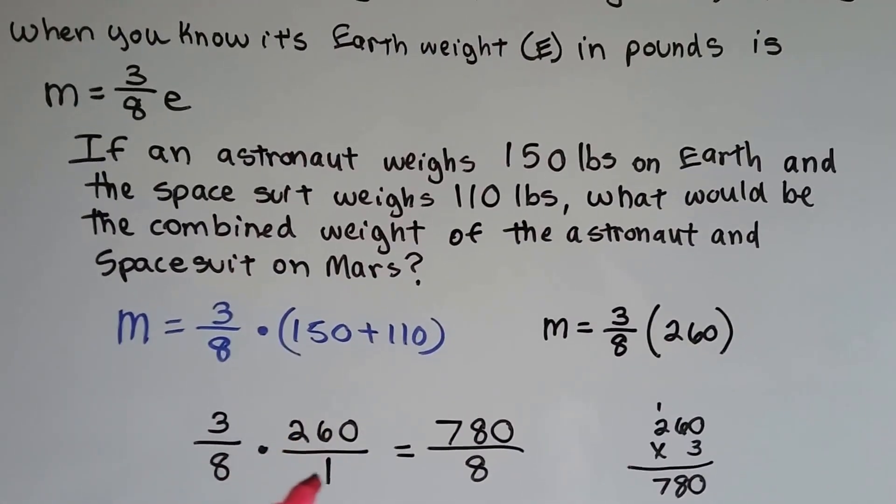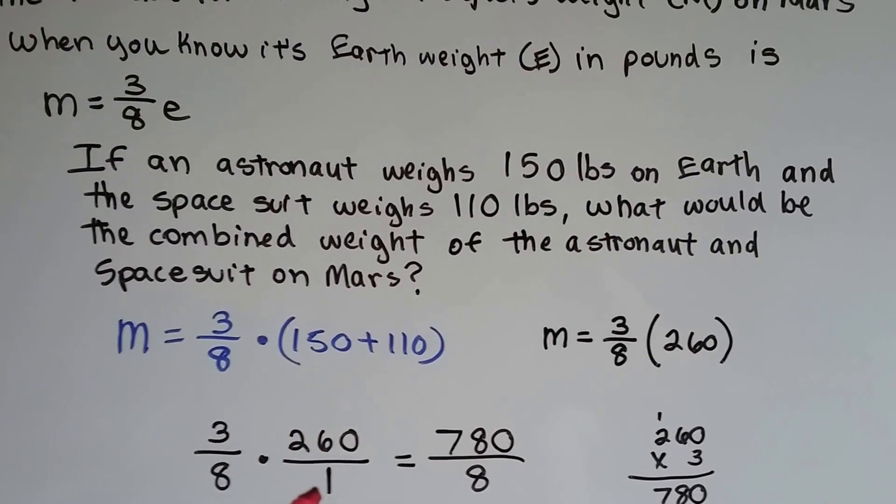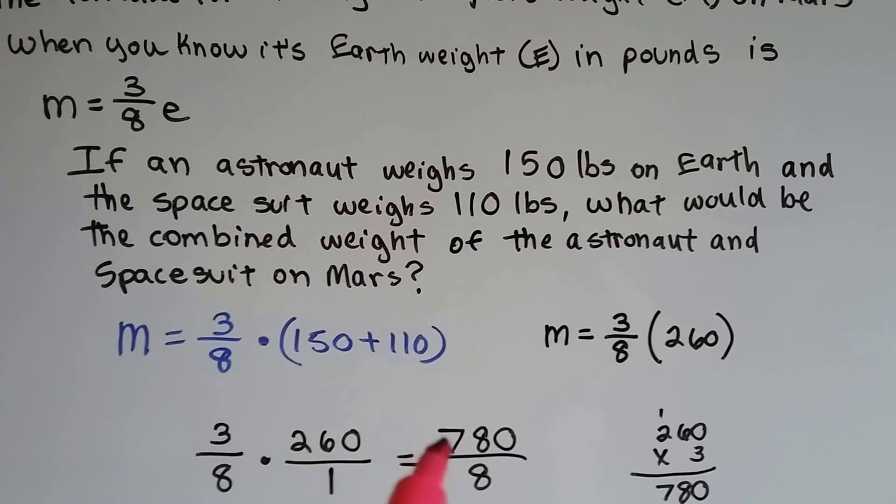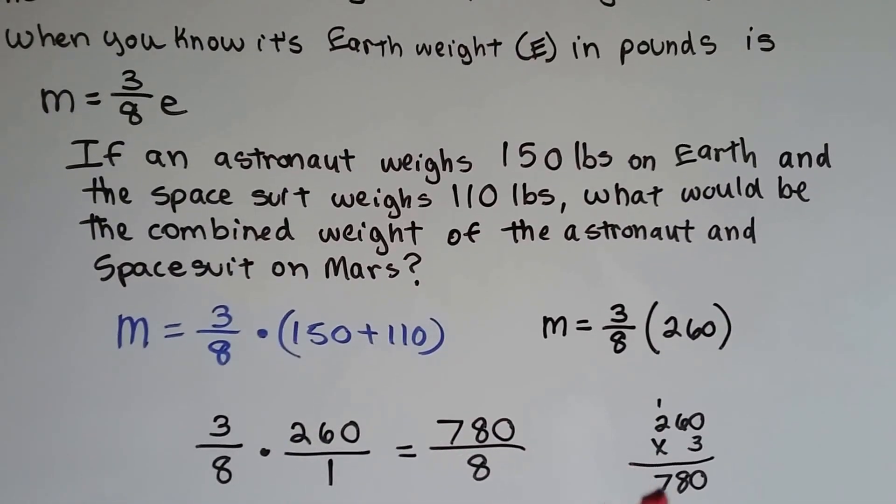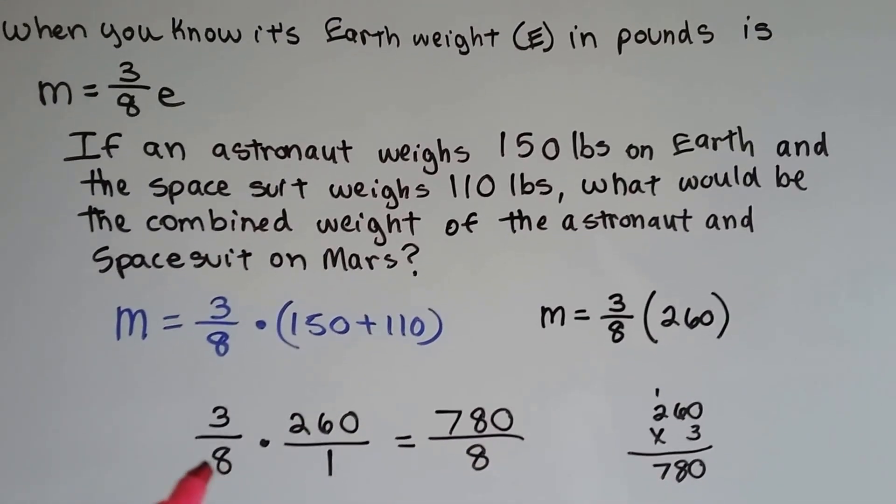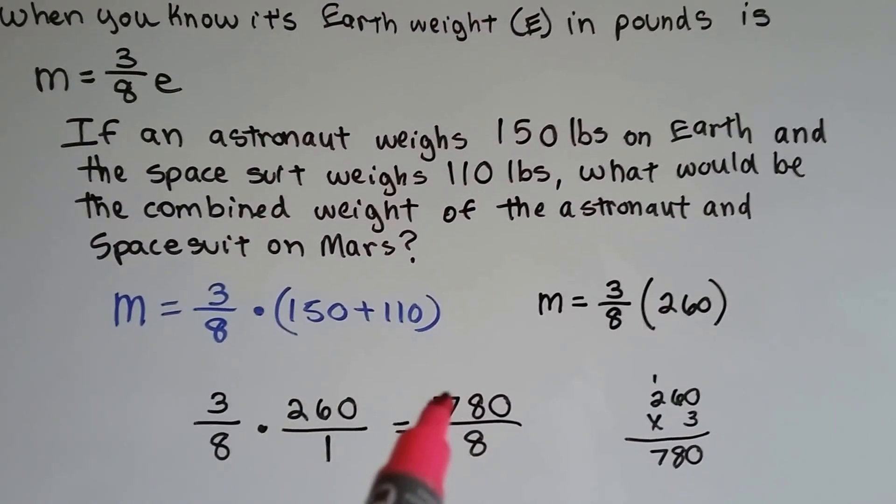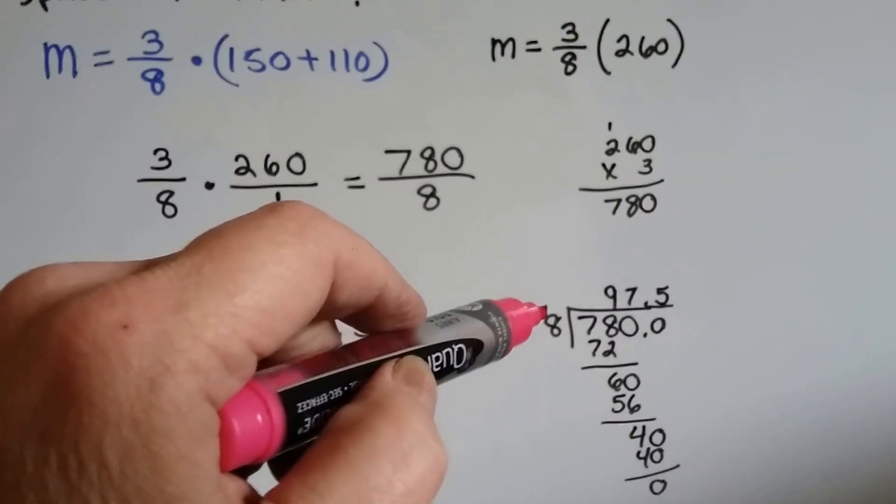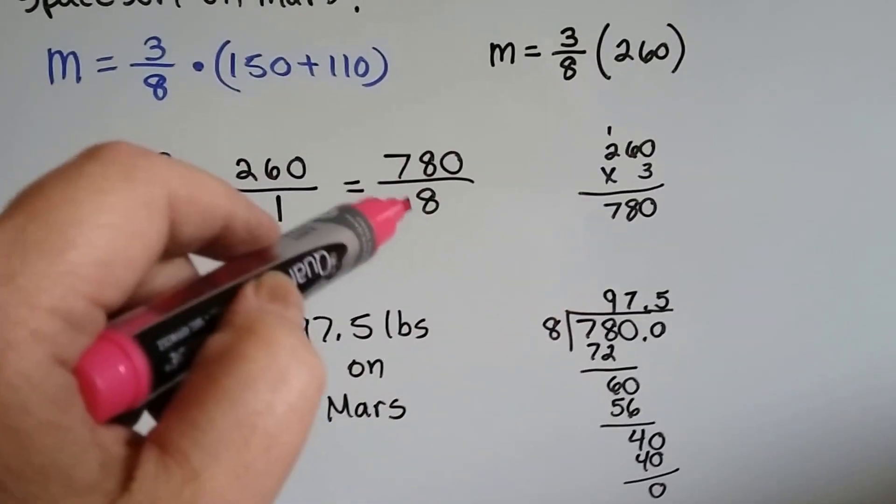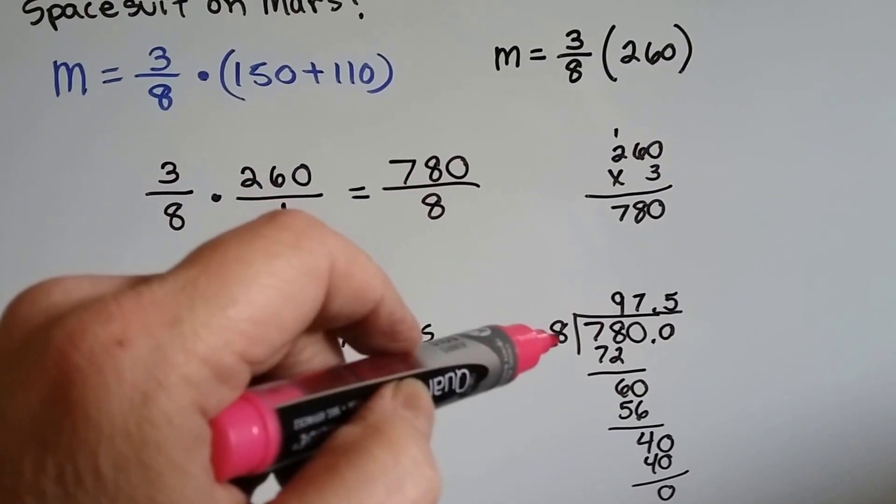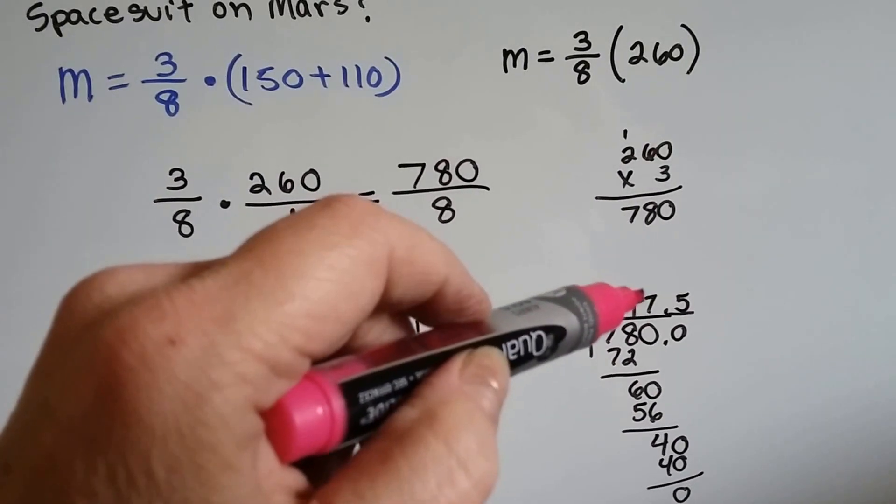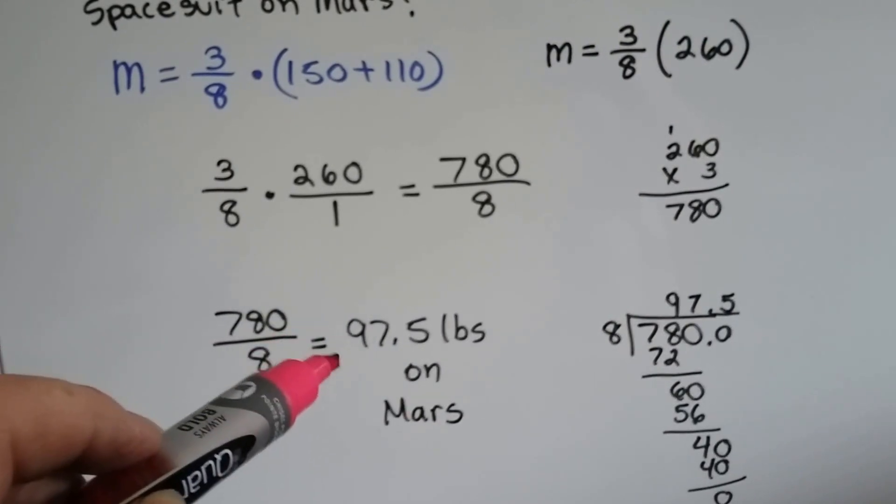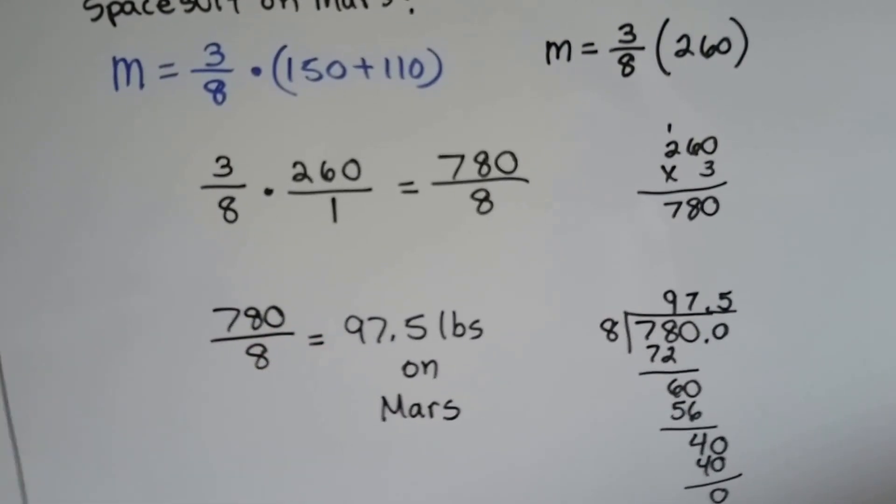3 eighths times 260 over 1 is how we write it as a fraction, because we want to multiply fractions. 3 times 260, we do a little math on the side, we get is 780. And 8 times 1 is 8, we have 780 over 8. So now we do our long division, and 8 goes into 780, because that's what this is, is a little division problem. It works out with long division to 97.5 pounds. So we know that the astronaut would weigh 97.5 pounds on Mars.